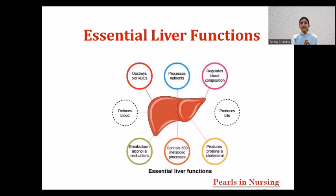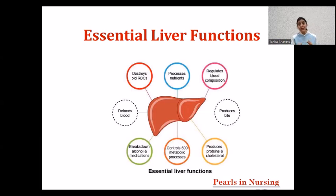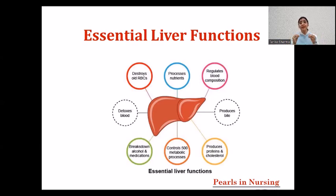The liver performs more than 500 functions in the body, making it a very important organ. Key functions include producing proteins such as albumin and globulin, producing cholesterol, producing bile, breaking down toxic materials like alcohol and medications through detoxification, destroying old red blood cells, processing nutrients from food, and producing coagulation factors that assist in the blood clotting mechanism.